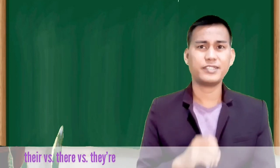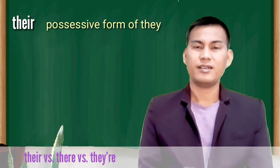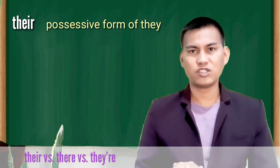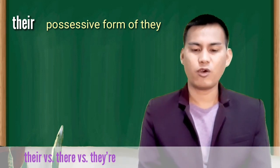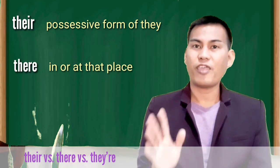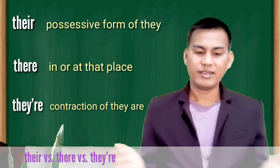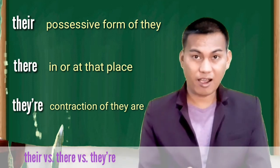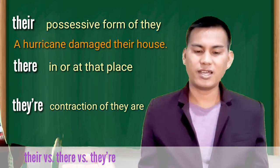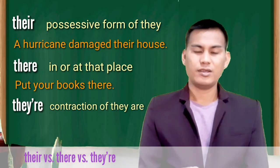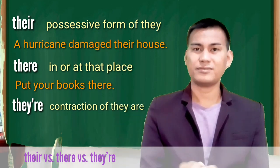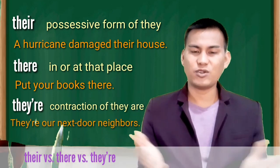Their versus there versus they're. Their, T-H-E-I-R, is a possessive form of they. There means in or at that place. They're is a contraction of they are. A hurricane damaged their house. Put your books there. They're our next door neighbors.